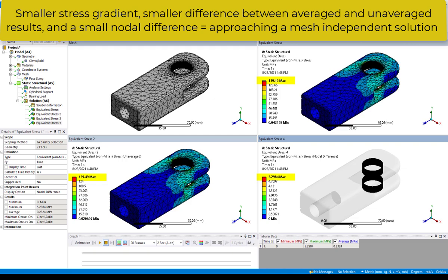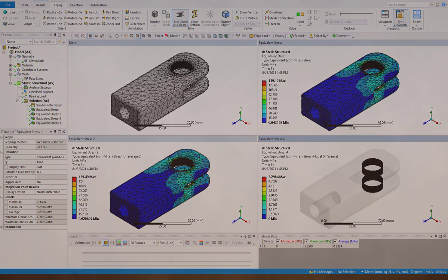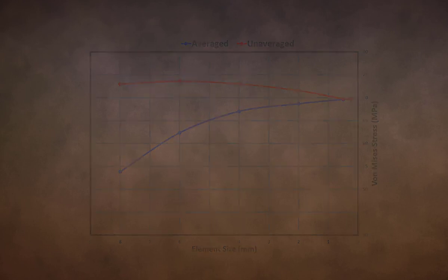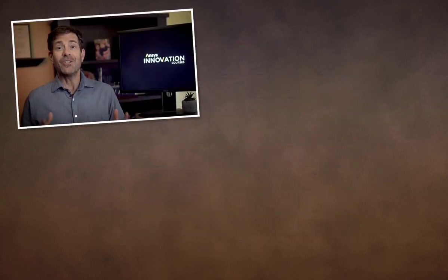If we continue this process, we'll find that the results become independent of mesh size. Have a look at this plot of averaged and unaveraged equivalent stress vs. element size. We can see how the two curves approach a common value as the element size decreases.